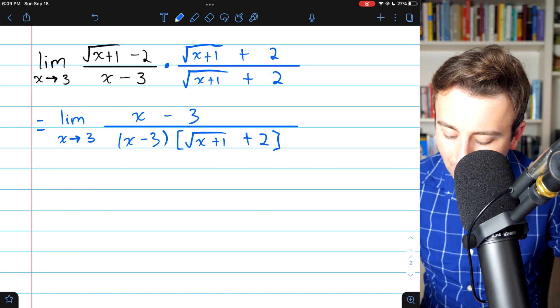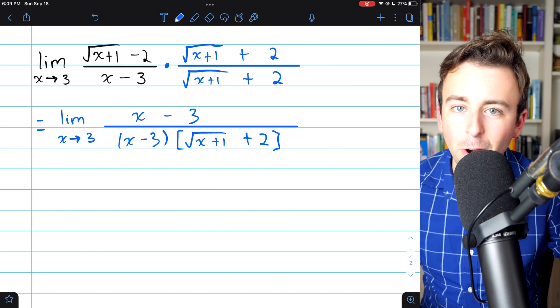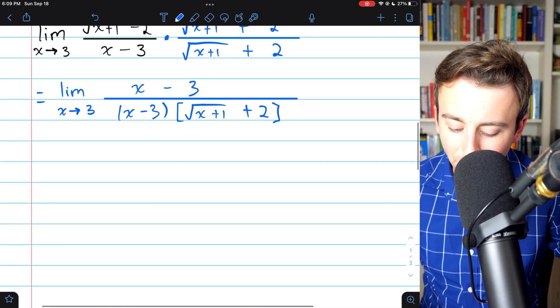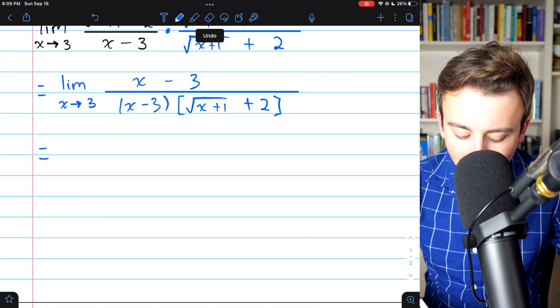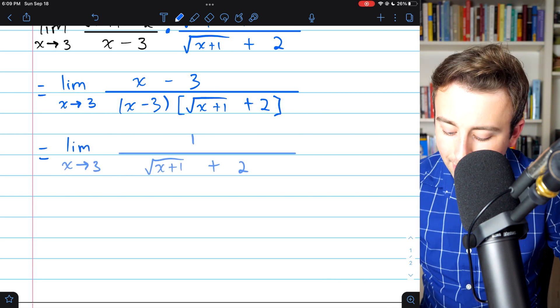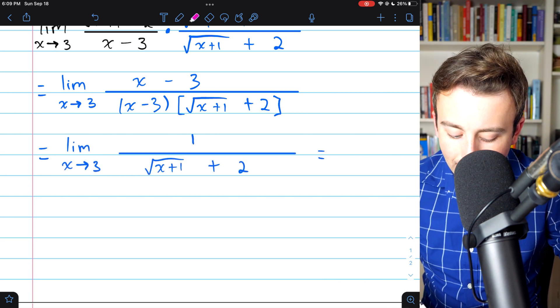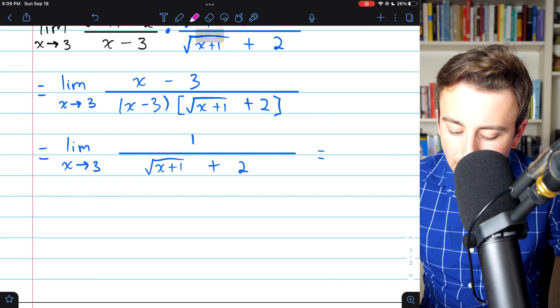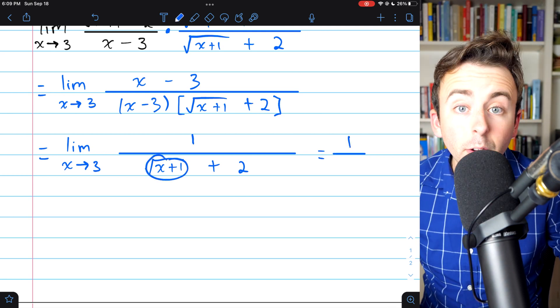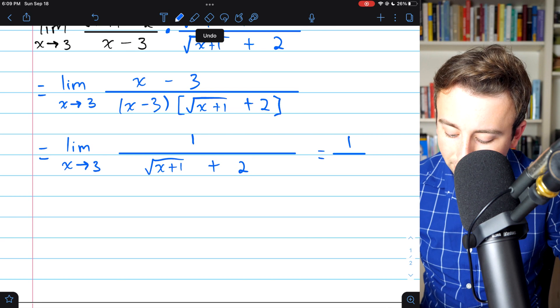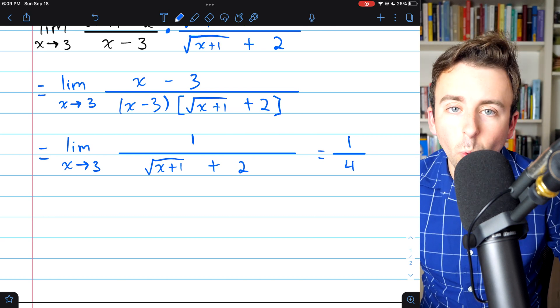And I guess I don't know what I was talking about, saying that this one was harder. It's pretty much exactly the same as far as the mechanics go. So then what will we do? We'll cancel out the x minus 3s, and then we're pretty much done. At this stage, we can plug in x equals 3. That's going to leave us with 1 divided by the square root of 4, which is 2, plus 2. And so we get 1 fourth.